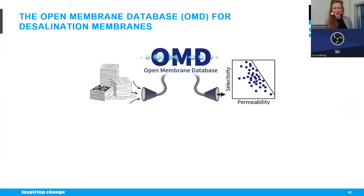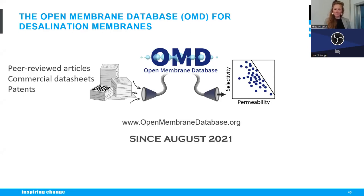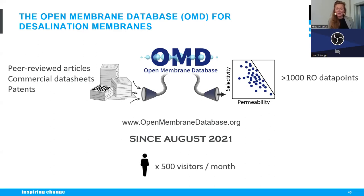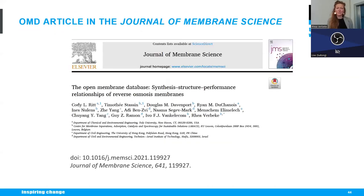What is the OMD? It is an archive of membrane performance data. We input data from peer-reviewed articles, commercial data sheets, and patents. The output is selectivity-permeability plots and information on how membranes were made. We currently have over a thousand reverse osmosis data points. We launched it in August 2021, and we have about 500 unique visitors per month. We also wrote an article about it in the Journal of Membrane Science.